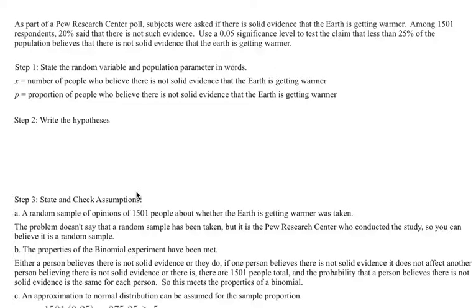Use a 0.05 significance level to test the claim that less than 25% of the population believes that there is not solid evidence that the earth is getting warmer. The way I know that this is a hypothesis test is because it actually says 'test the claim.' Anytime you see the word 'test' or 'do the data show' or anything like those words, it means you're doing a hypothesis test.